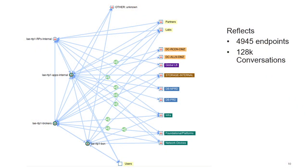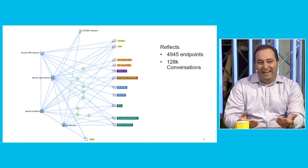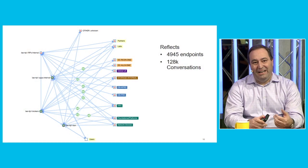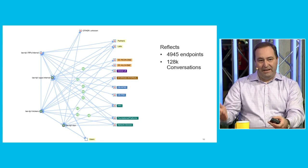Looking at a single application — we were talking about web, app, and DB, but that simple three-tier app doesn't really exist. This is what an actual application looks like in a data center, and you can see the complexity means we're going to have to do something a lot more complex than just web, app, and DB.